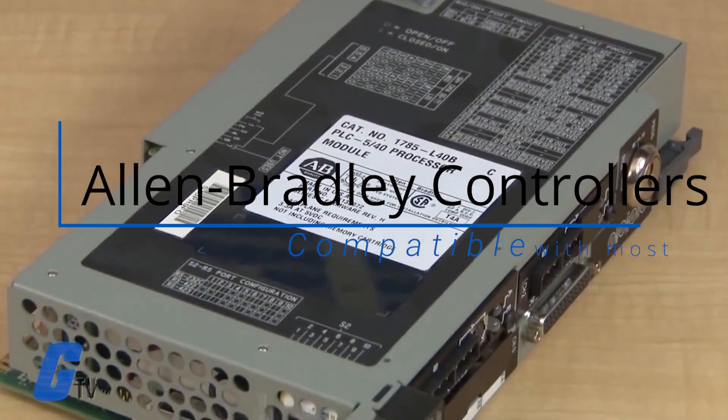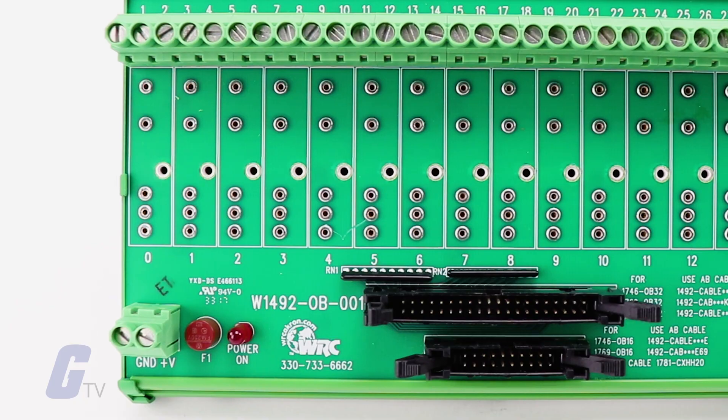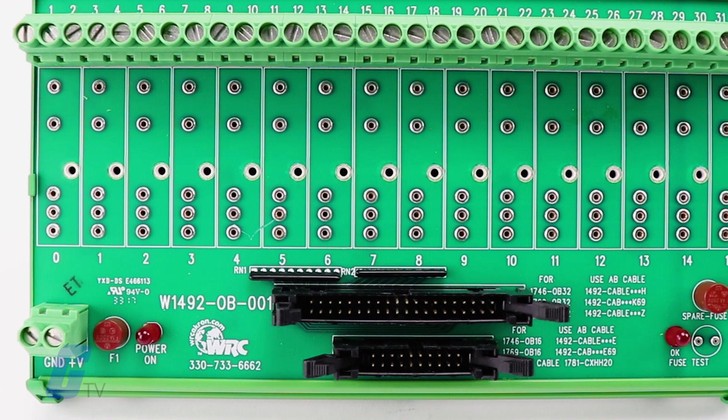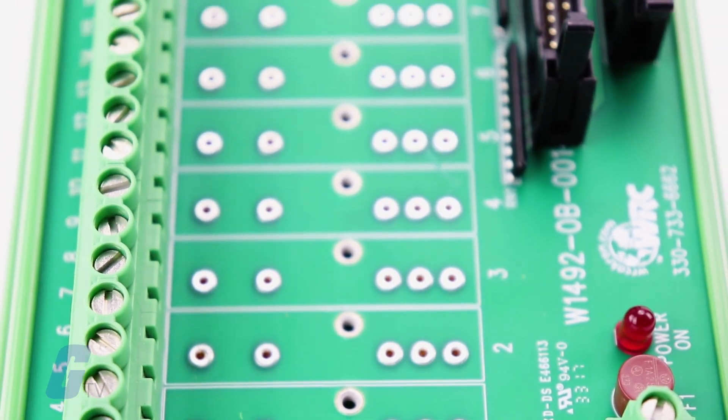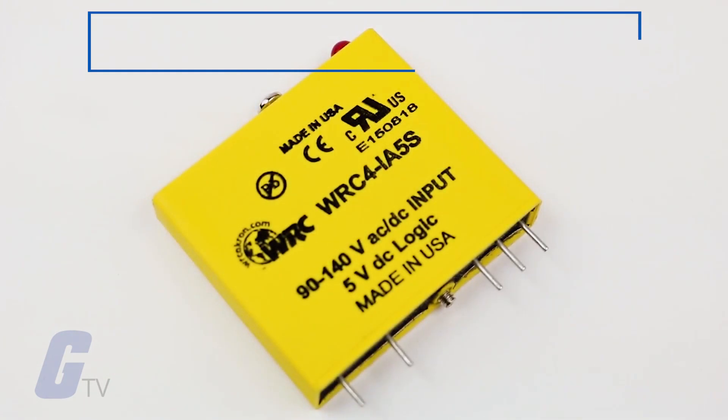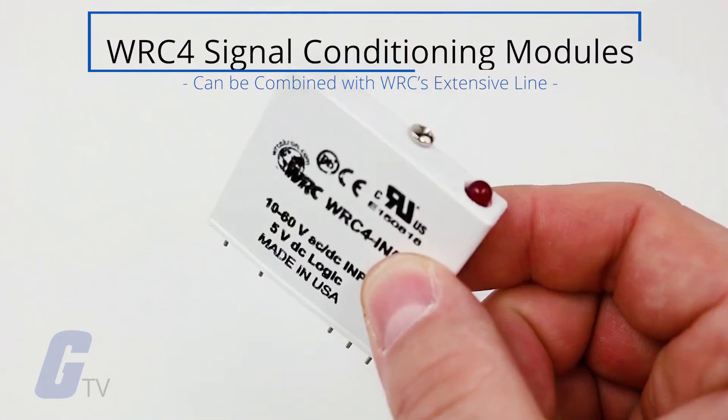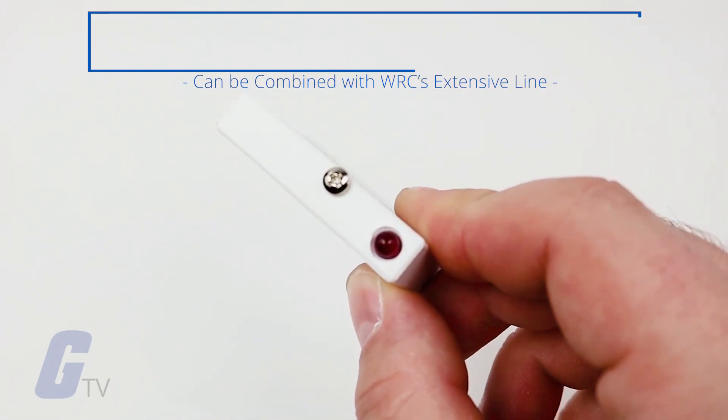Compatible with most Allen-Bradley controllers, WRC's W1492 Field Termination Panels, also known as FTPs, can be combined with WRC's extensive line of WRC4 signal conditioning modules.